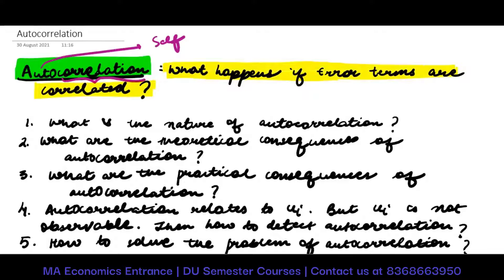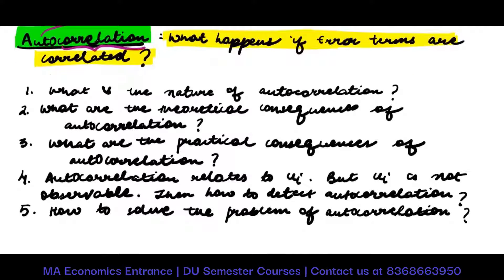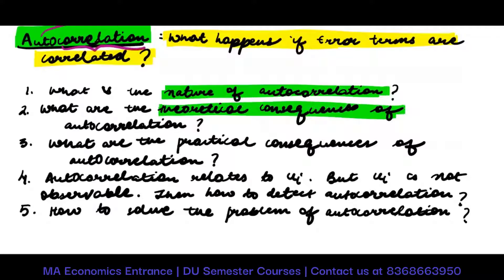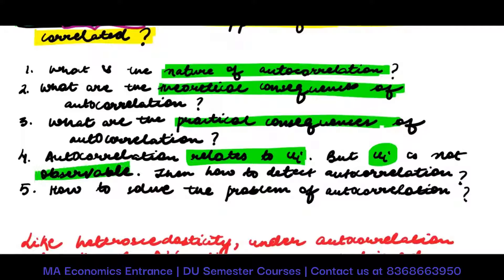We are going to address the following questions: What is the nature of autocorrelation? What are the theoretical consequences of autocorrelation? What are the practical consequences of autocorrelation? Autocorrelation relates to the error term, but the UIs are not observable — so how do we detect autocorrelation?